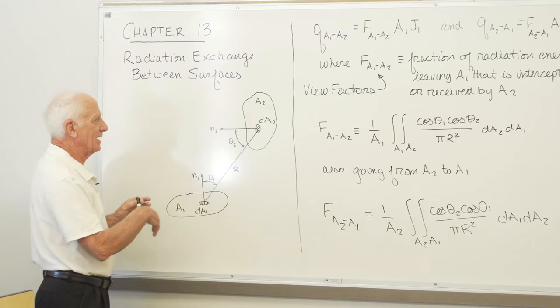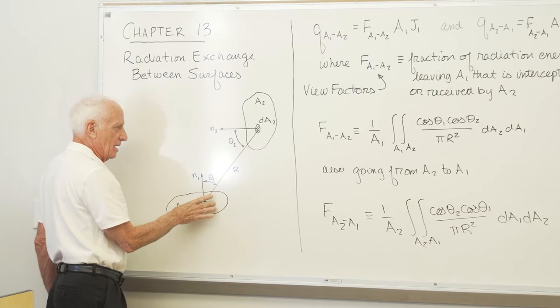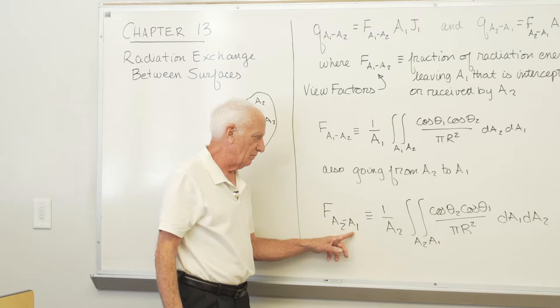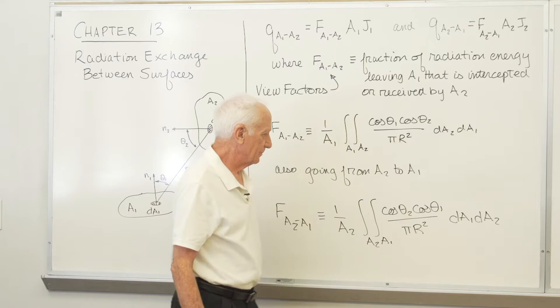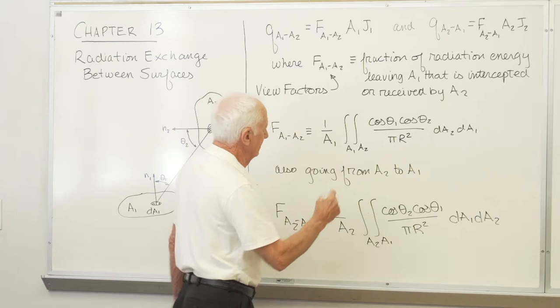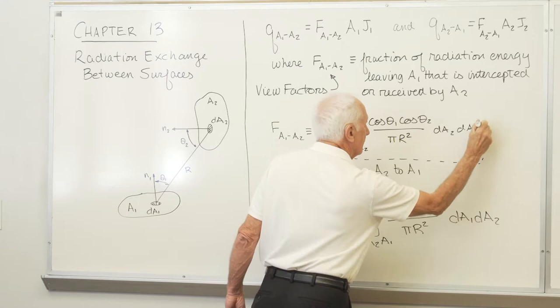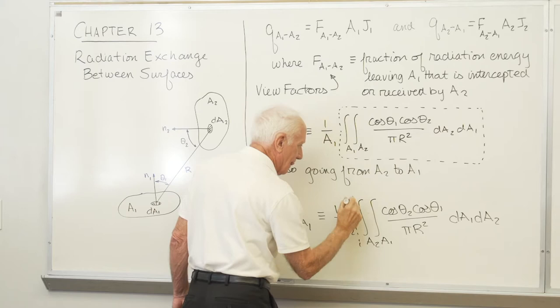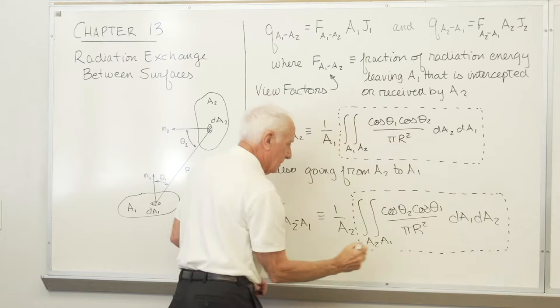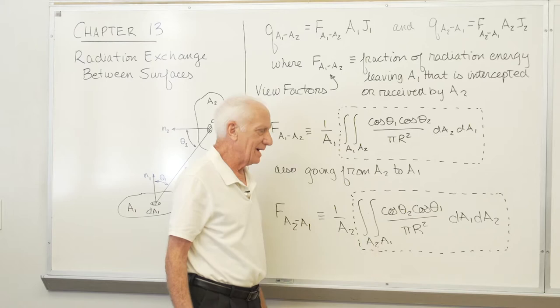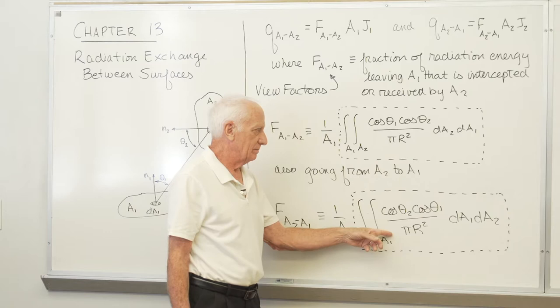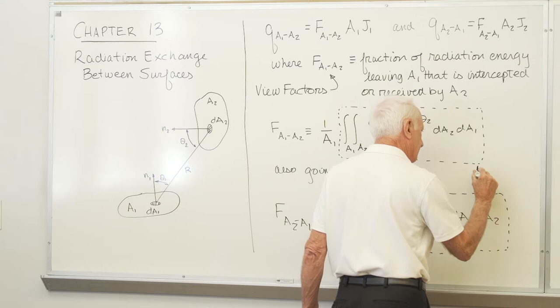You can also go the opposite direction: the fraction of energy leaving surface A2 that ends up reaching surface A1. That's 1 over A2 times the double integral — same numerator, same denominator. You can notice that these two double integrals are identical. I don't care about the order of integration — A2 first then A1, or A1 first then A2. What's under the double integral is the same, so these two expressions are equal.